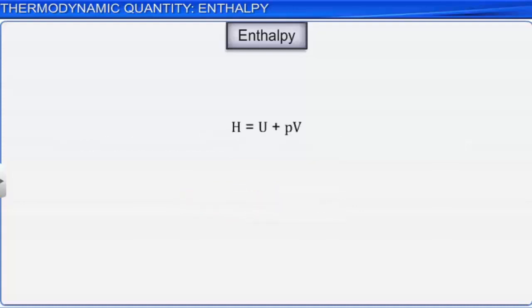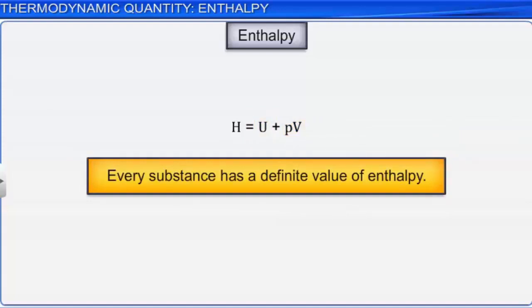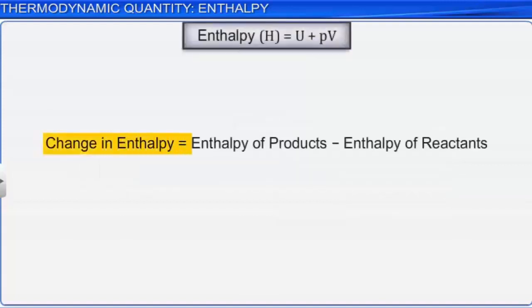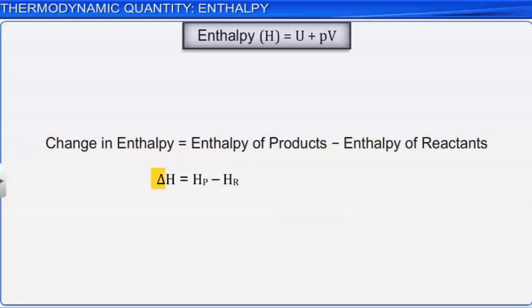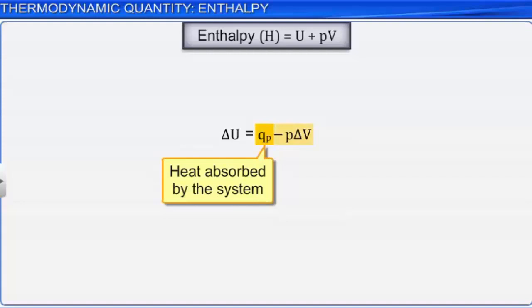Note that enthalpy is also called heat content. Enthalpy depends on the three state functions — internal energy, pressure, and volume — and is also a state function. Every substance has a definite value of enthalpy. Like internal energy, enthalpy of a substance cannot be measured. However, it is possible to measure the change in enthalpy. The change in enthalpy equals the difference between enthalpy of products and enthalpy of reactants: delta H = HP − HR. The significance of delta H also follows from the first law of thermodynamics: delta U = QP − P × delta V, where QP represents the heat absorbed by the system and −P × delta V represents the work done by the system.